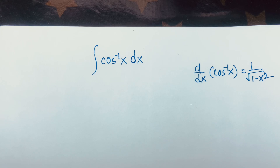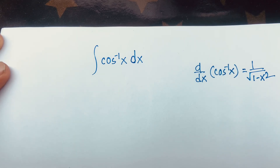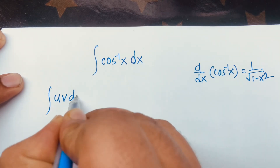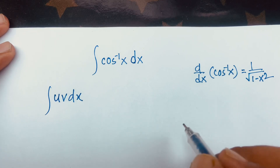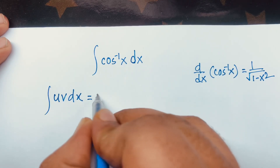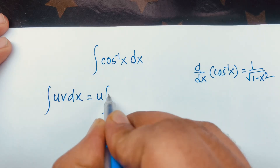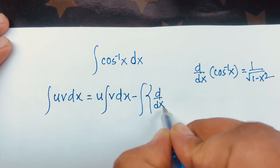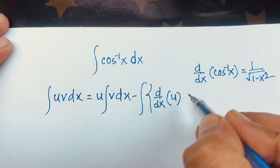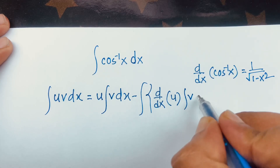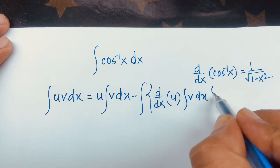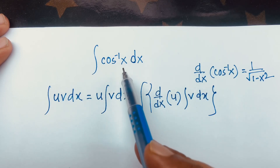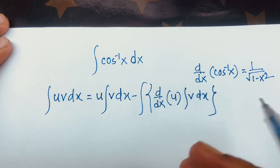So to solve this question, remember the integration by parts formula: the integral of u·v dx is equal to u times the integral of v dx, minus the integral of the derivative of u times the integral of v dx.